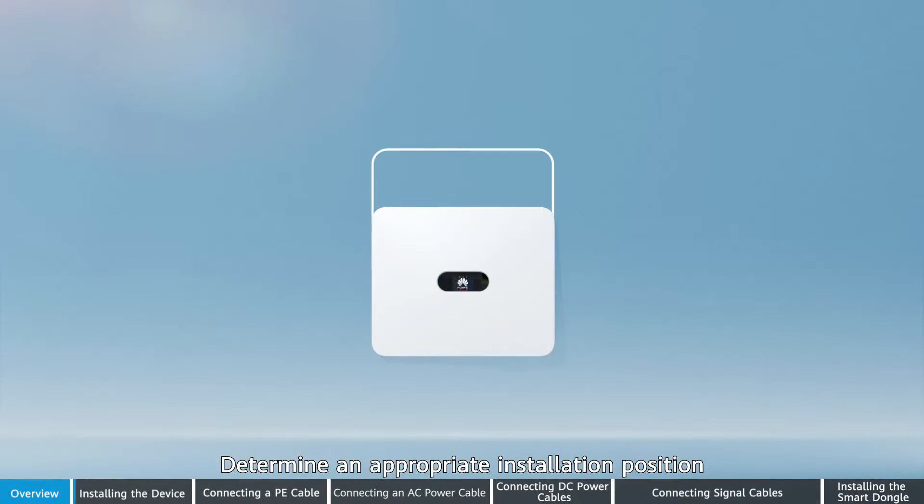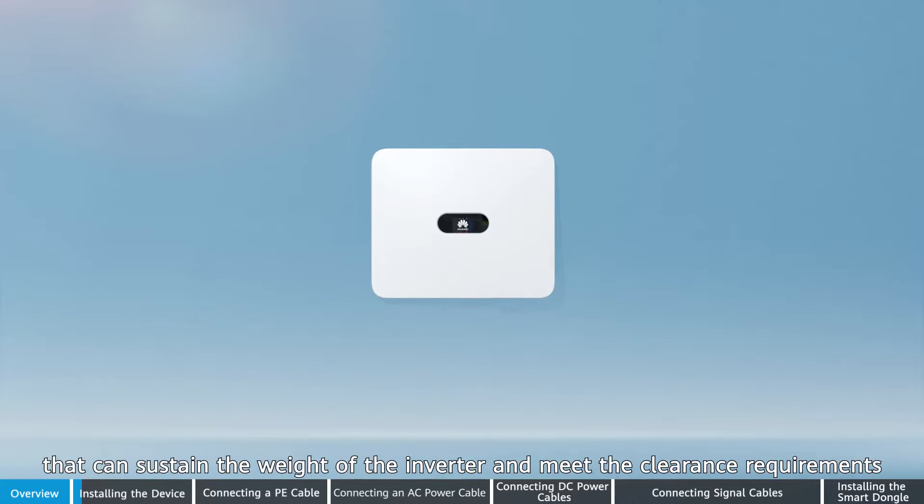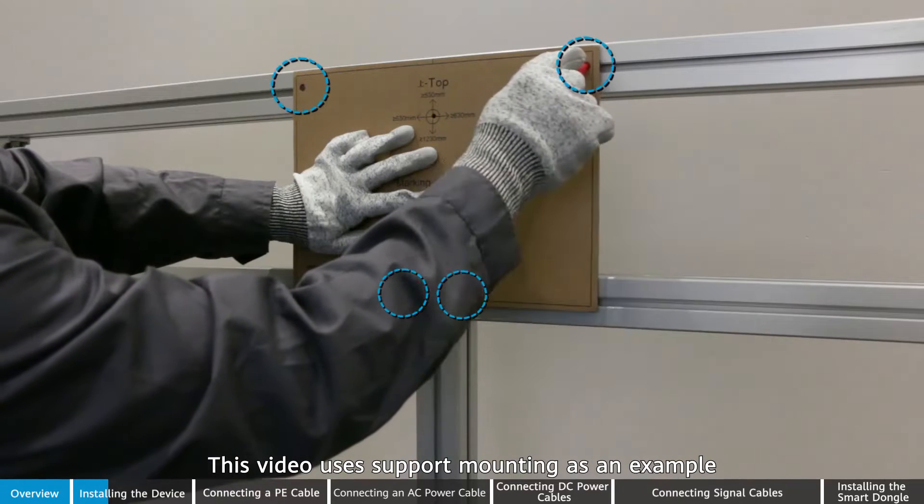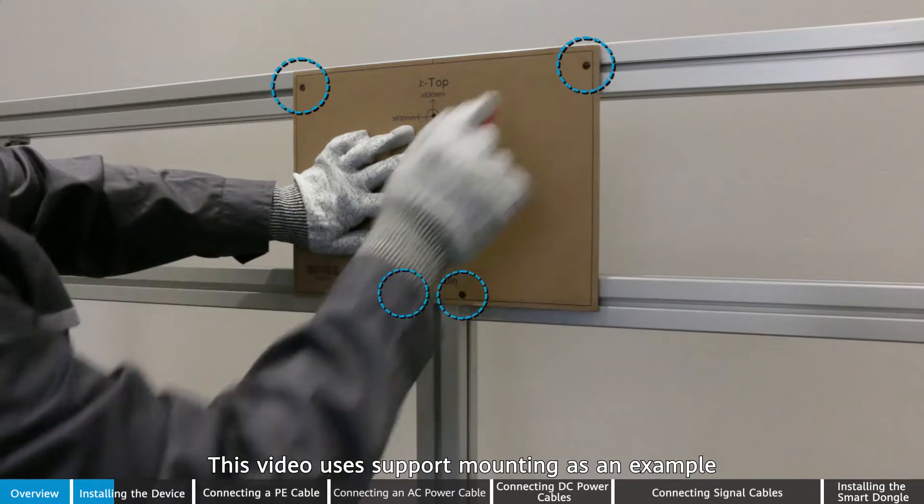Determine an appropriate installation position that can sustain the weight of the inverter and meet the clearance requirements. The inverter can be mounted on a wall or on support. This video uses support mounting as an example.